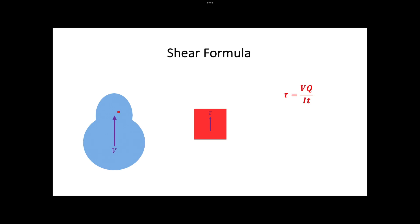Parameter V in the equation represents the shear force at the cross-section, which can be found from the shear diagram or being given. Parameter I is the moment of inertia of the cross-section about the neutral axis. Parameter T is the width of the cross-section at the point of interest. Q is the parameter calculated by the following equation, where A' is the area of the cross-section above the point of interest, and Y bar' is the distance from the centroid of area A' to the neutral axis.